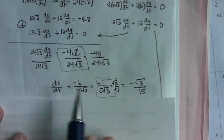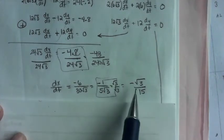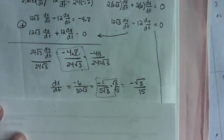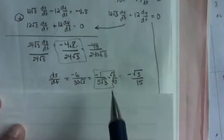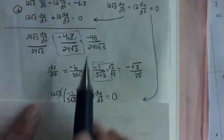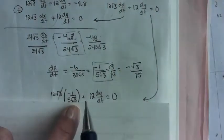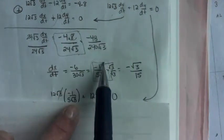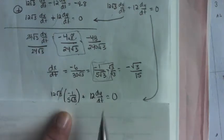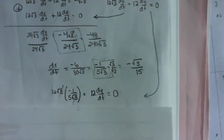So DX DT equaled this. And then I rationalized. And then once you know DX DT, I just went back up into here and plugged it in. So 12 root 3. And then I replaced the DX DT. I actually replaced it with this version of DX DT so that my root 3s would cancel. And then solve for DY DT.